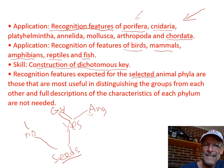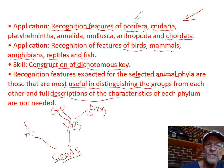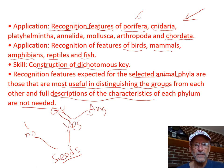Selected animal phyla — they told us about features most useful in distinguishing them, but it would be nice if they told us specifically which ones. Full descriptions of each are not needed, but how full is full? Frustrating.